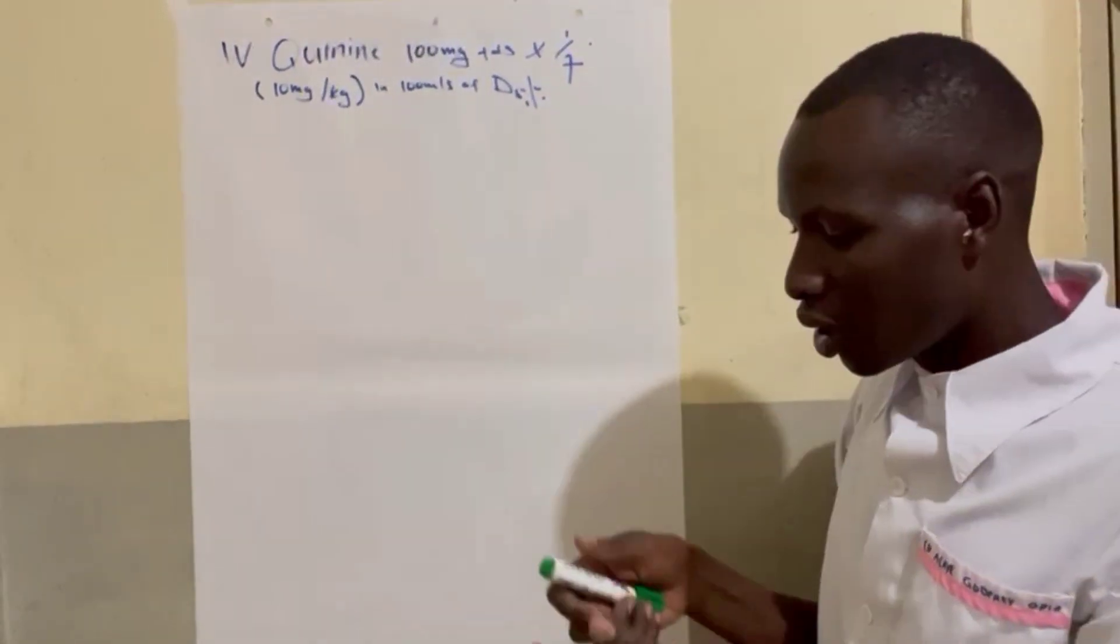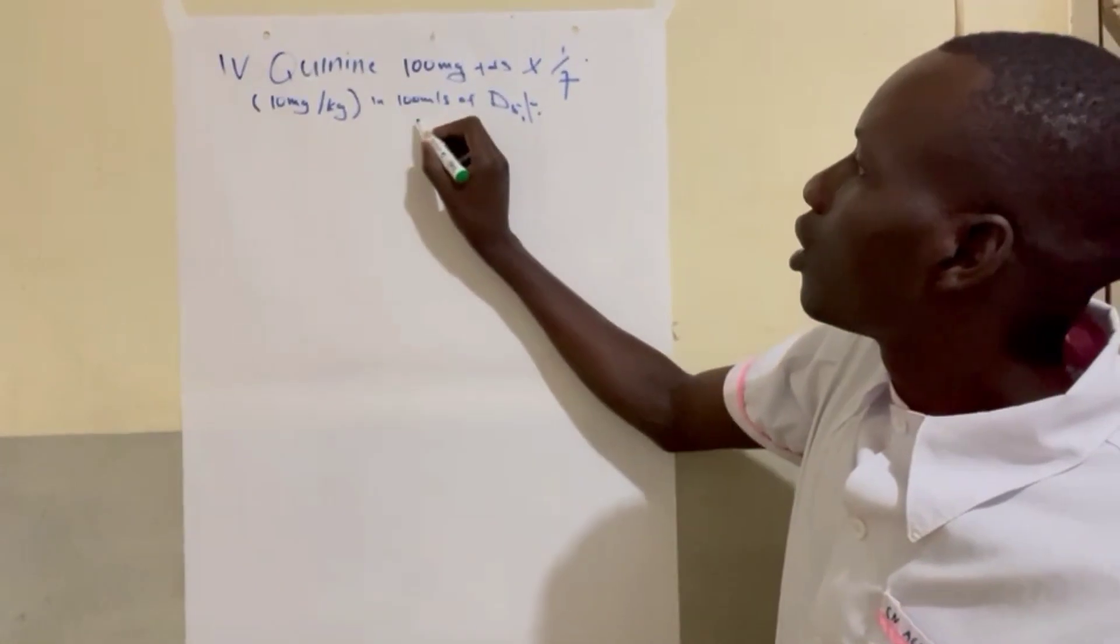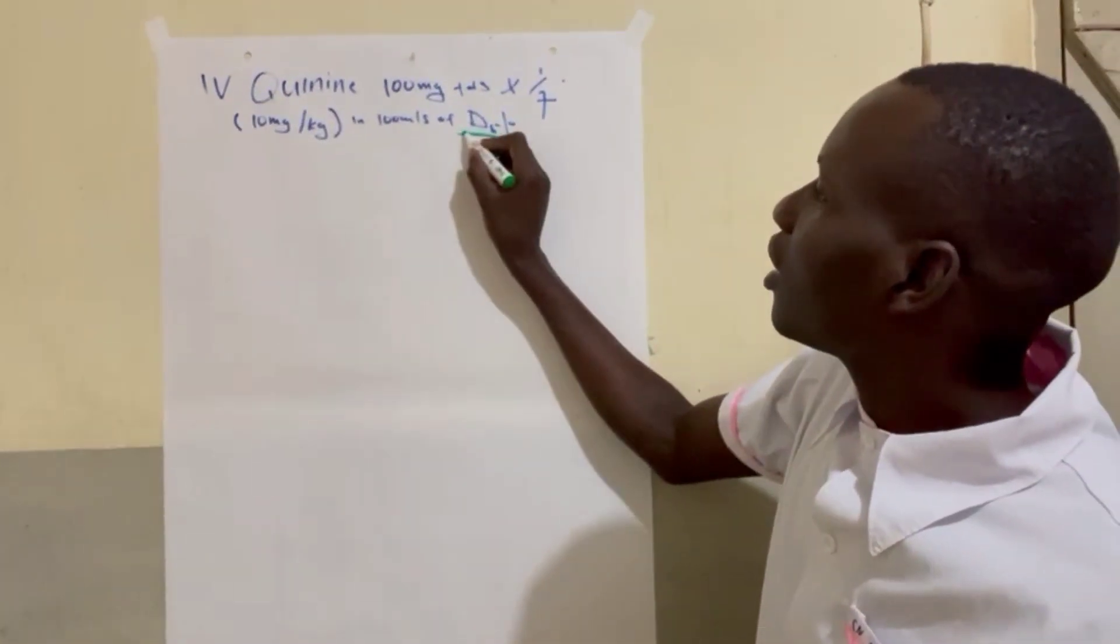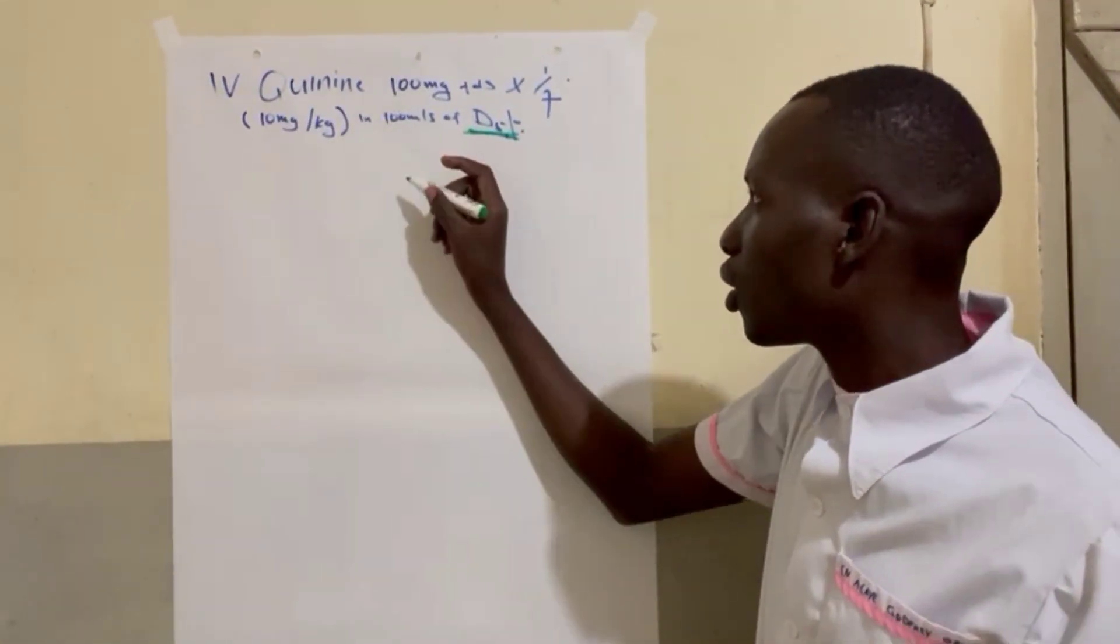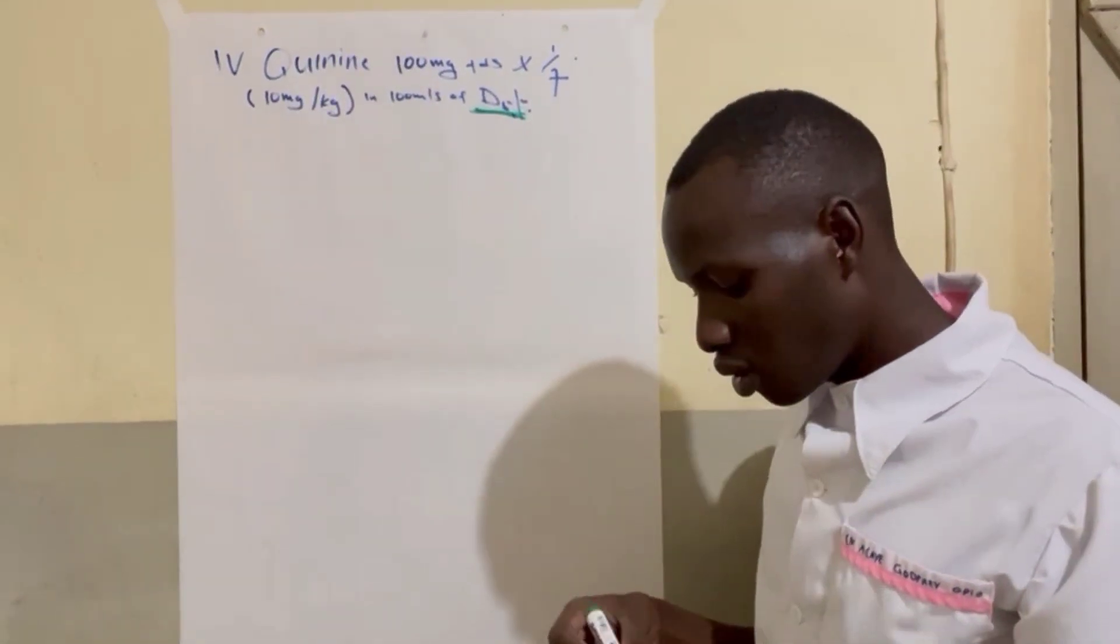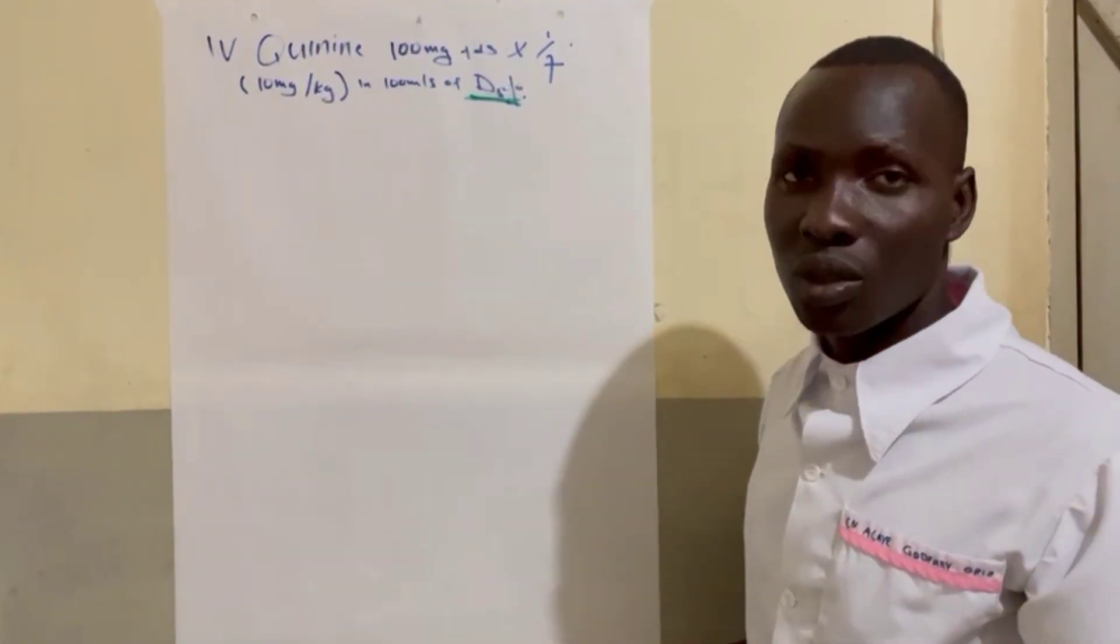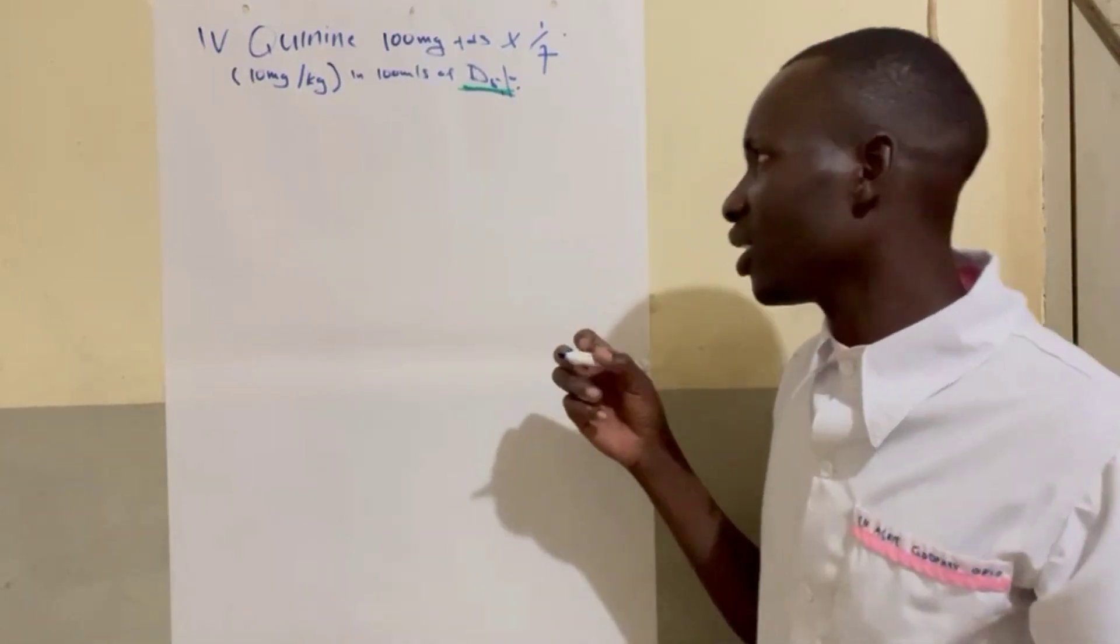So we are going to put this one in dextrose, dextrose 5%. So quinine you don't give alone, you have to put in dextrose because of the hypoglycemic side effects.